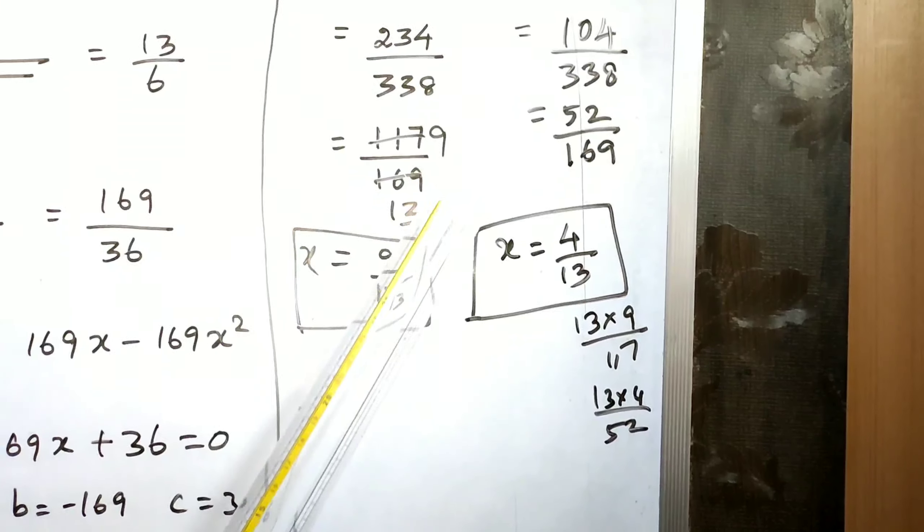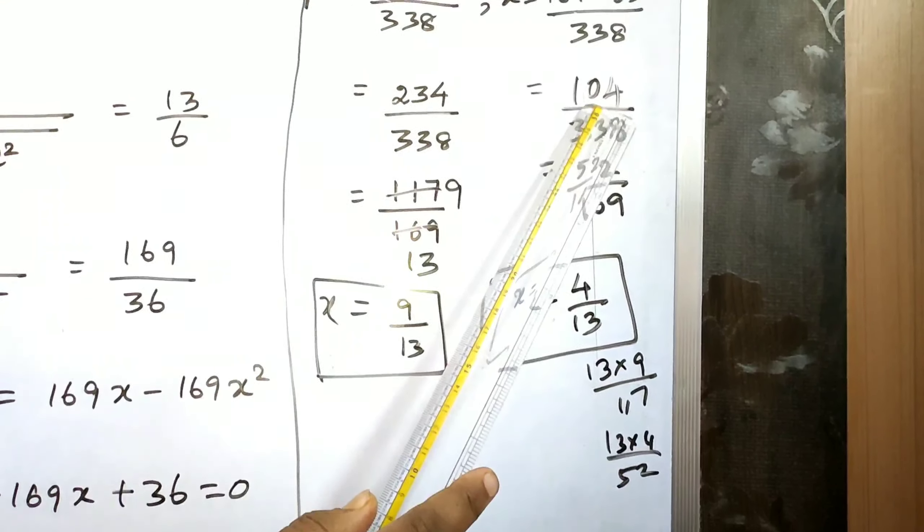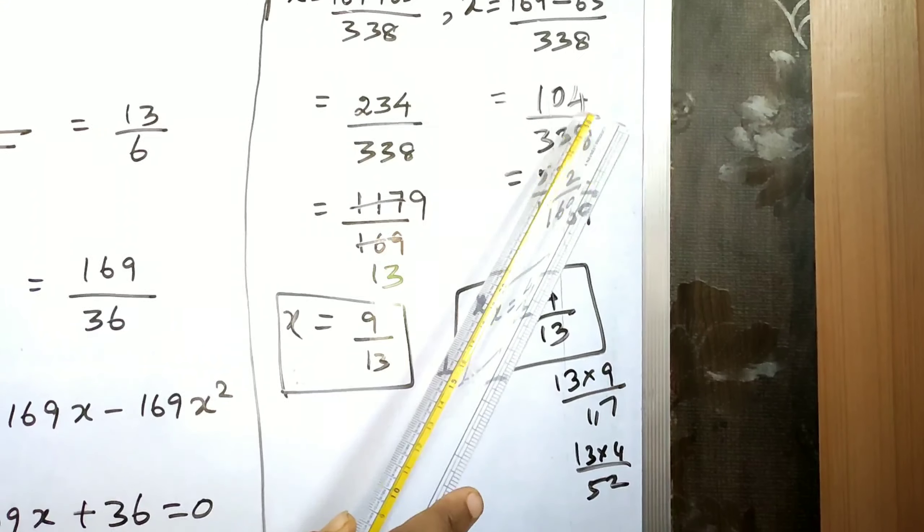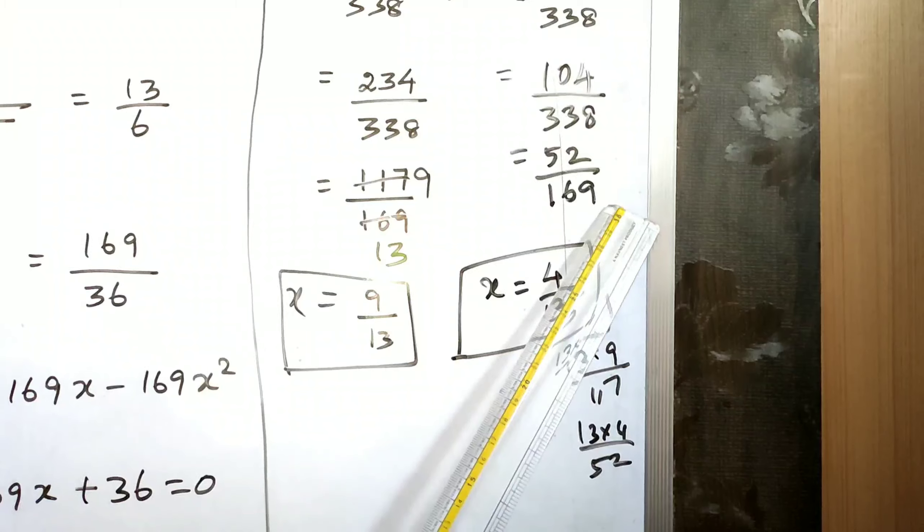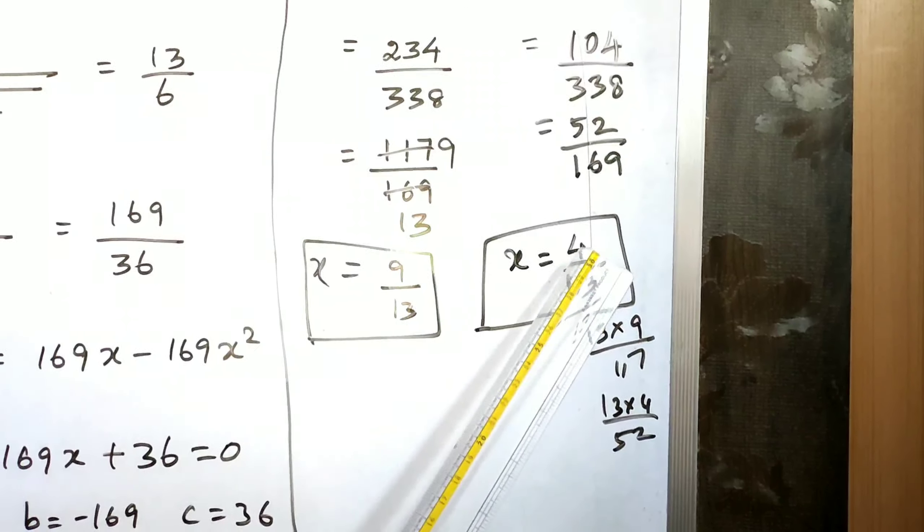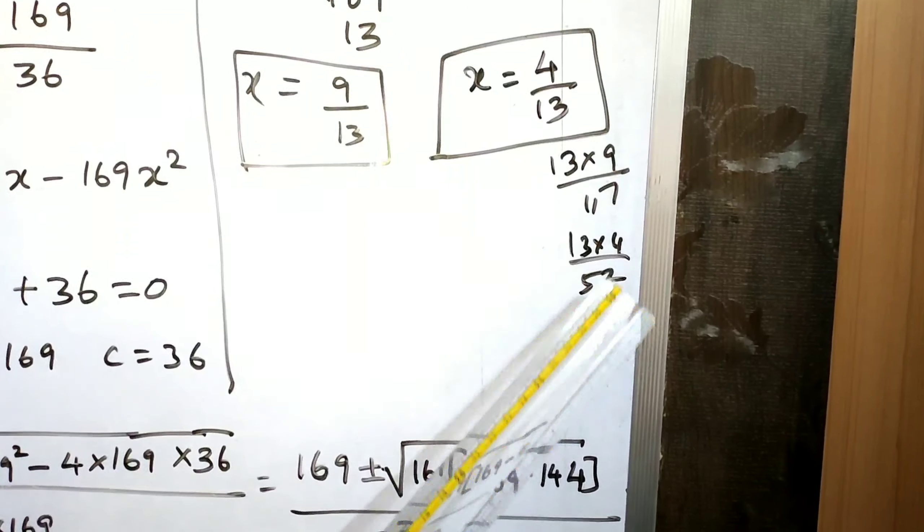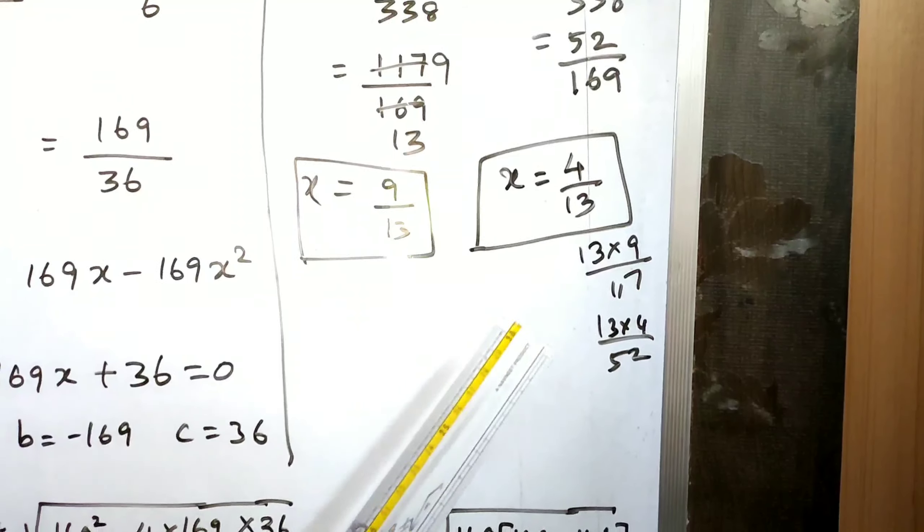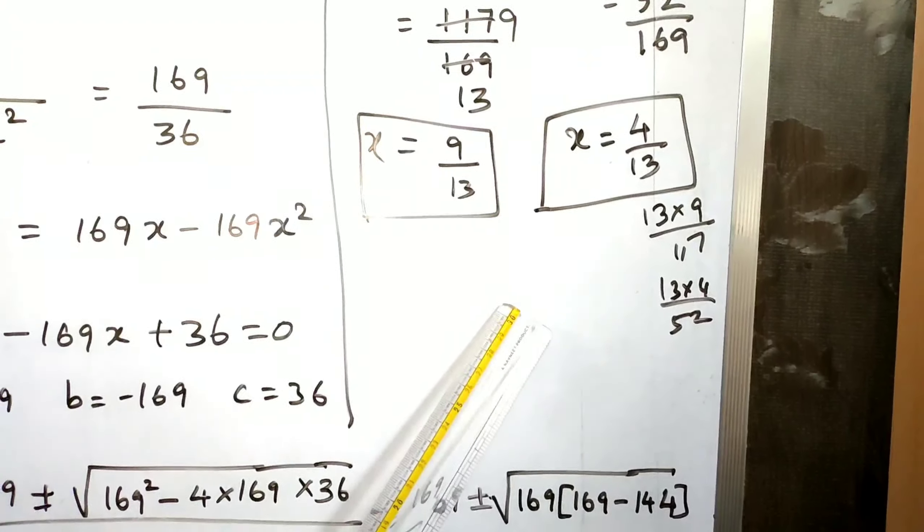Cut with 2nd table: 5 2s are 10, 2 2s are 4 by 169. Again cut with 13th table, 13 times 4 is 52. So 9 by 13, this one is 4 by 13. This is our book back answer.